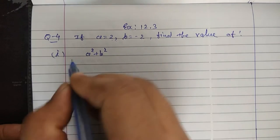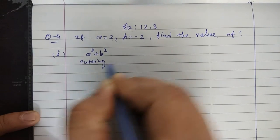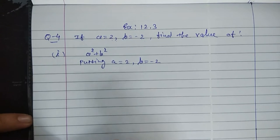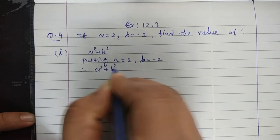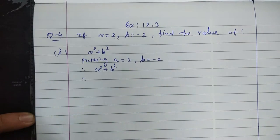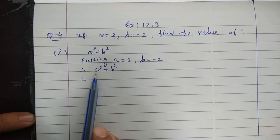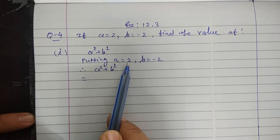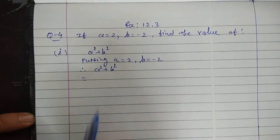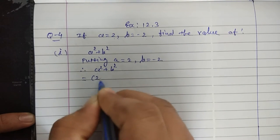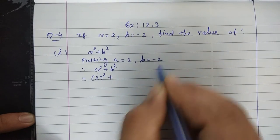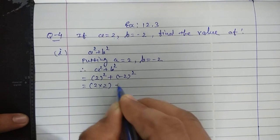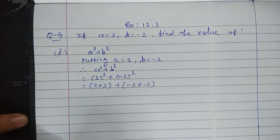Expression 1: A square plus B square. Putting A is equal to 2, B is equal to minus 2. Therefore expression A square plus B square is equal to: keep in mind that whatever the variable is, only its value you have to write. Value of variable A is 2 and value of variable B is minus 2. So A square means 2 square, plus B square means minus 2 square. That is 2 multiplied by 2, plus minus 2 multiplied by minus 2.